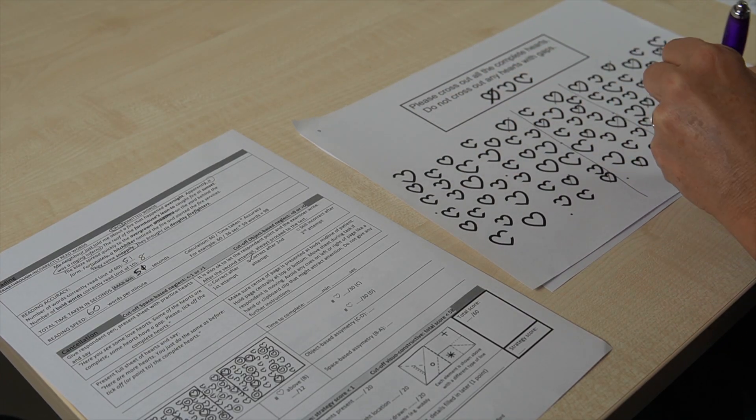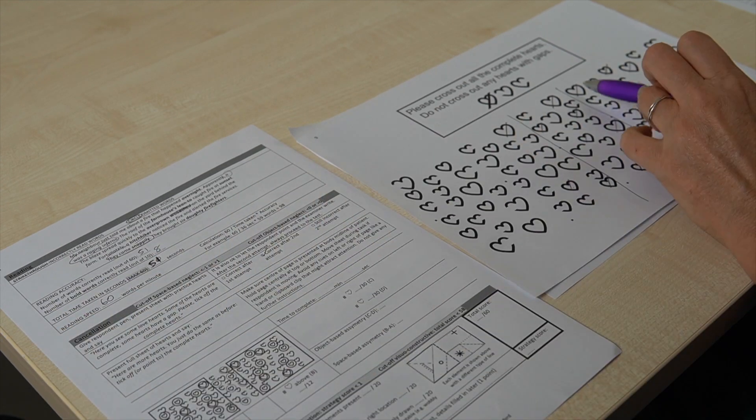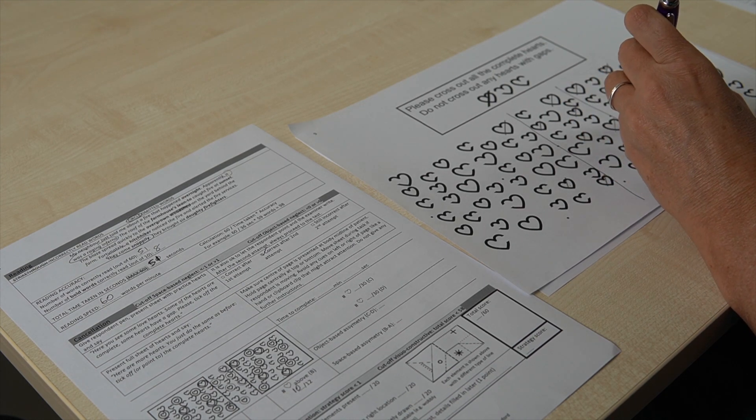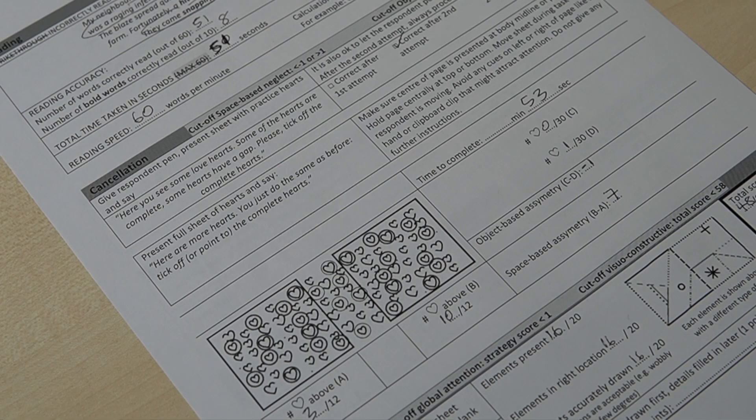When it comes to the cancellation task, again, you want to record the time when you're with the patient, but then you can score this separately. And you do that by dividing the page into two main boxes, A and B, you can see here on the form, and counting how many hearts they marked off in each of those boxes. Then you might like to circle the hearts that they will have ticked off that were uncompleted hearts. Then you enter how many hearts on the left side, which is A, and also the right side. In this case, the patient got three out of 12 hearts on the left side, and they got 10 out of 12 on the right. And they only circled one incomplete heart. You'll see on the worksheet C and D, we subtract that to get our object-based asymmetry, which is minus one. And then you subtract the B and the A as well, which we get number seven.